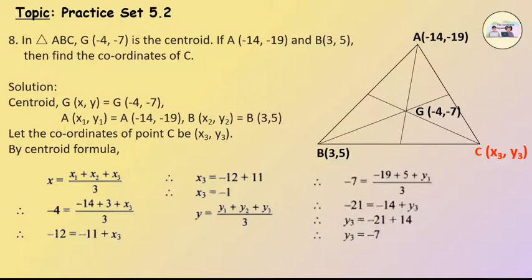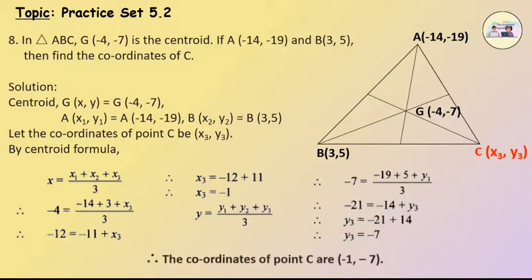y = (y1 + y2 + y3)/3. Therefore, -7 = (-19 + 5 + y3)/3. Therefore, -21 = -14 + y3. Therefore, y3 = -21 + 14 = -7. Therefore, the coordinates of point C are (-1, -7).